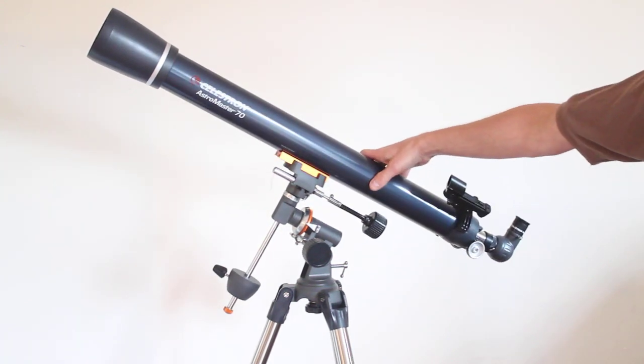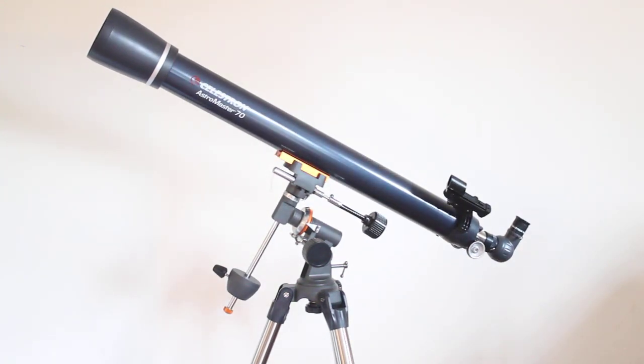It's a 70mm objective lens, fully coated optics, and it comes with a couple of basic eyepieces which are modified achromatics, which is a posh way of saying budget. It's a f12.8 focal ratio and that's 900mm focal length, which is very good for photography, which I'll come into in a second.